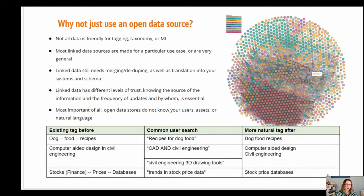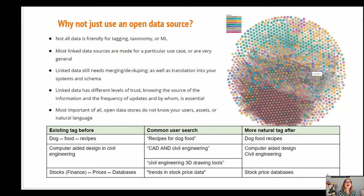Why even bother with the exercise of card sorting or extracting natural language when you can do this in an automated way? Well, there are a few reasons. Are you all familiar with the Linked Data Cloud? It's essentially a giant cloud of all the open data sources out there that are usually free to use, at least under Creative Commons. Why not just use that? I hear people say this all the time — engineers especially. They say, 'I don't need taxonomy, I can just use Wikidata.'